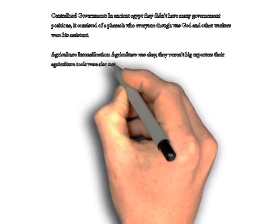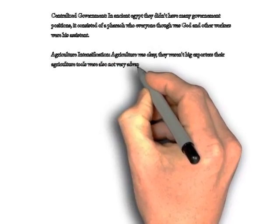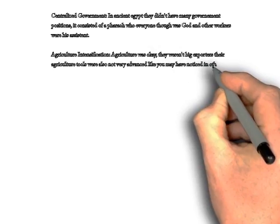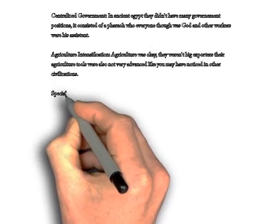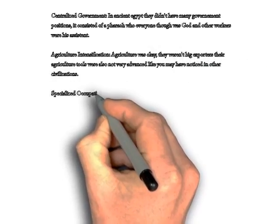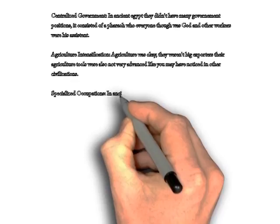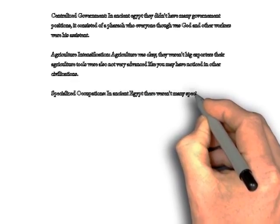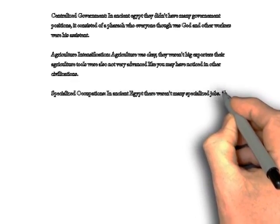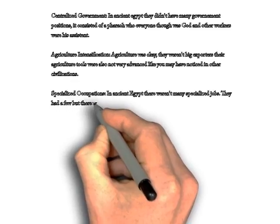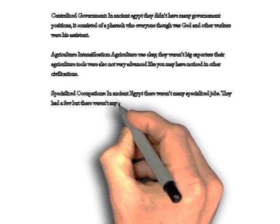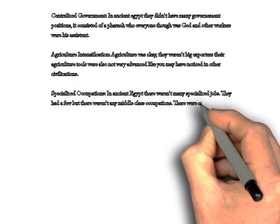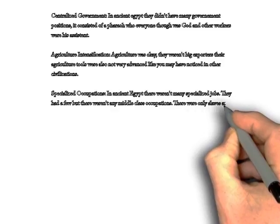Specialized Occupations. In ancient Egypt there weren't many specialized jobs. There weren't many middle class occupations — there were slaves and then merchants. Social Structure in ancient Egypt was well structured; however, it wasn't very complex compared to other civilizations.